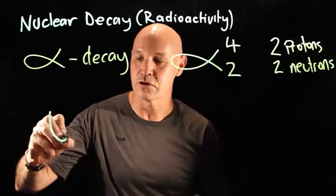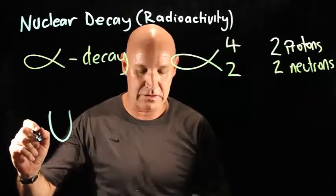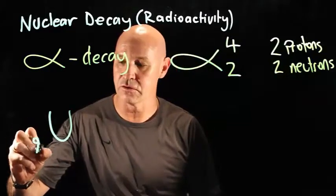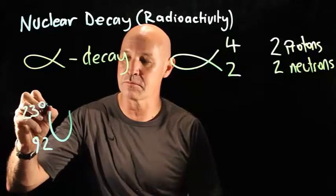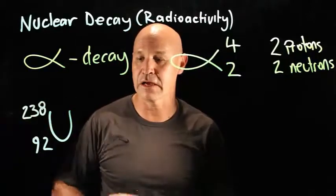For example, uranium has an atomic number of 92, and this particular isotope of uranium tends to undergo alpha decay.